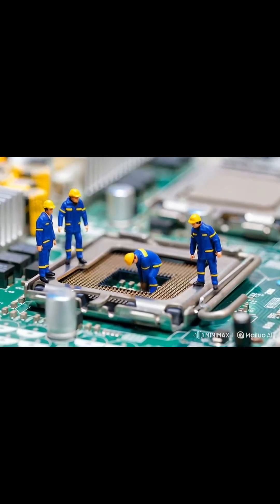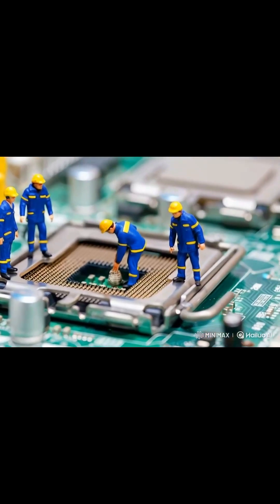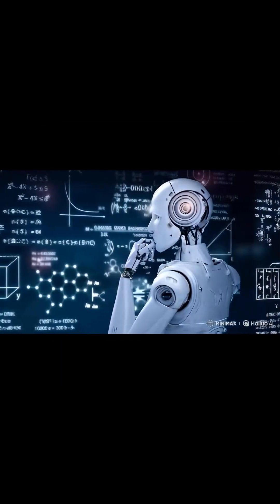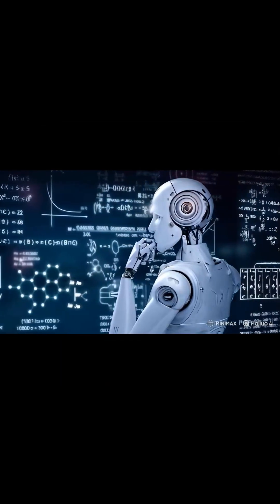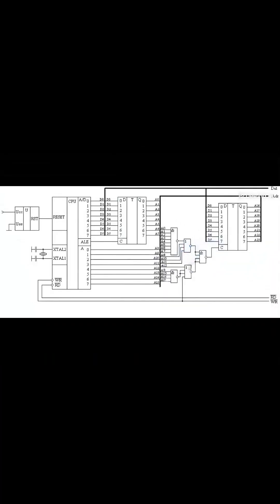What does a processor actually do? Modern computers are capable of performing extremely complex tasks, from artificial intelligence to 3D graphics, and it might seem like the processor is doing very complicated operations. However, at the core of its operation is a set of simple instructions that are executed quickly and efficiently millions of times per second.